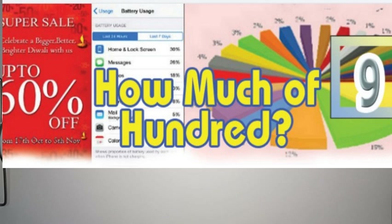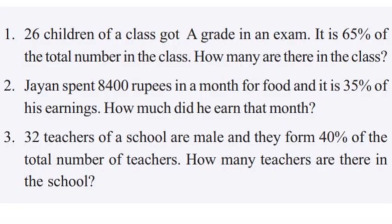First question: 26 children of a class got A grade in the exam. It is 65% of the total number in the class. How many are there in the class?